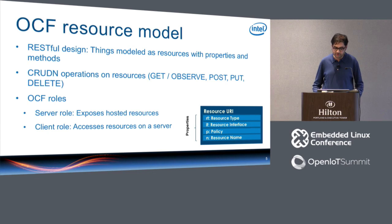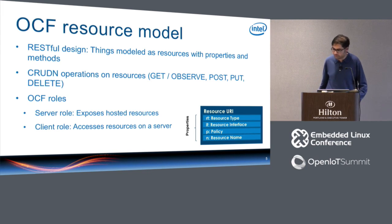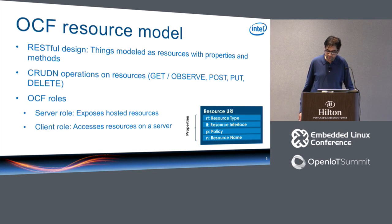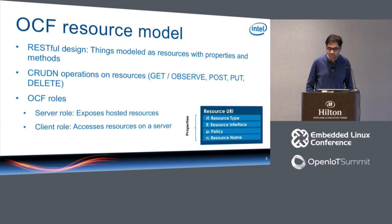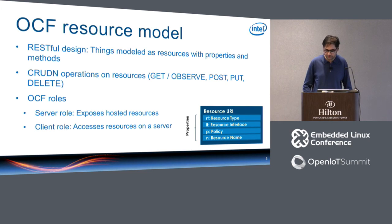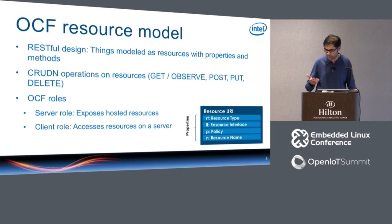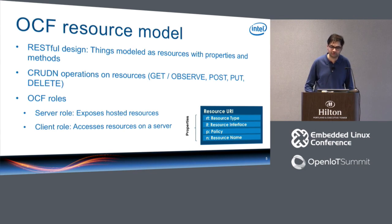Resources are generally defined with a set of standard common properties. They have a URI which identifies a particular physical object, a resource type, and are tagged with one or more interfaces — where an interface describes the set of operations that might be performed on the resource and the nature of their representations. OCF completely specifies a set of standard resource types and interfaces. Resources may also have policies such as whether they must be discoverable or observable, and can be assigned a friendly name.